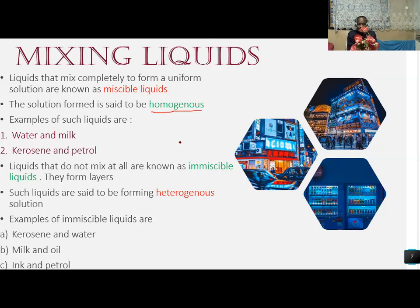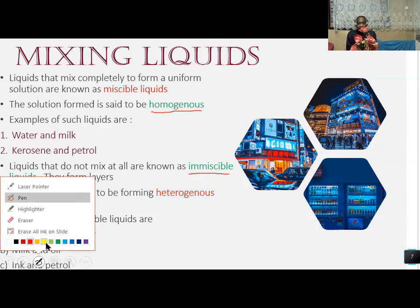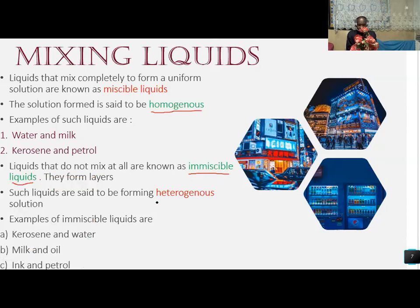Liquids that do not mix at all are known as immiscible liquids. They form layers. Such liquids are said to form heterogeneous solutions. For example, kerosene plus water forms two layers — one layer of kerosene and one layer of water.